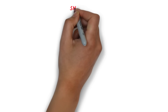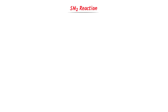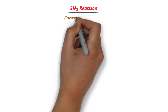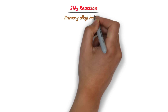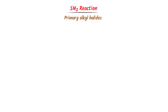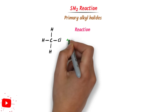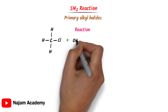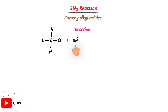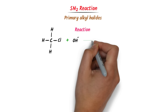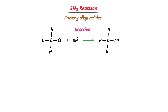Now let me teach you SN2 reaction. Remember that primary alkyl halides favor the SN2 reaction. Now I take a primary alkyl halide and place a nucleophile here. This strong nucleophile will replace this weak nucleophile. As a result, we get this compound.